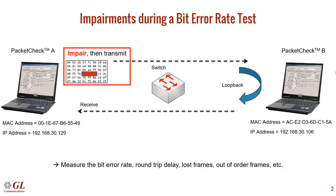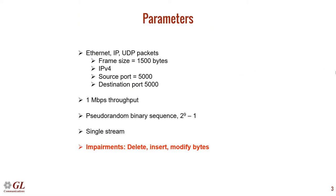We will impair the packets prior to transmission, and we expect to see bit errors in the received stream. The parameters for this test are as follows: we will send Ethernet frames containing IP and UDP data. We will conduct the test at 1 megabit per second and use a pseudorandom binary sequence as our bit pattern. We will impair the traffic by deleting, inserting, and modifying bytes.